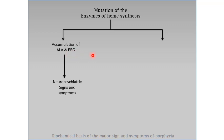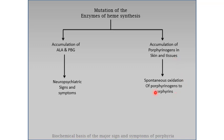If there is a mutation in the distal enzymes related to the heme synthetic pathway, that will lead to accumulation of various porphyrinogens in the skin and tissues. On exposure to UV light or sunlight, these porphyrinogens are spontaneously oxidized into porphyrins, which leads to photosensitivity. So earlier enzyme defects cause neuropsychiatric symptoms, while distal enzyme defects related to porphyrinogen synthesis lead to photosensitivity.